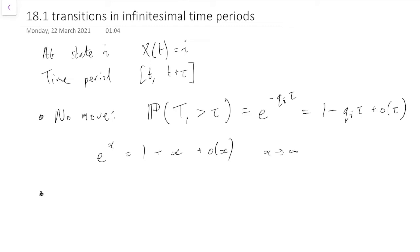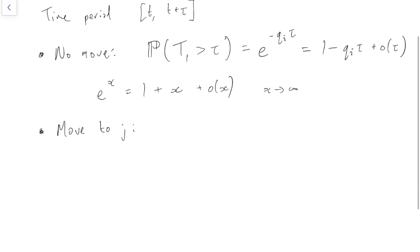Okay, but then perhaps we will move and we'll have to move somewhere, so maybe we move to some state j for example. What's the probability that happens?